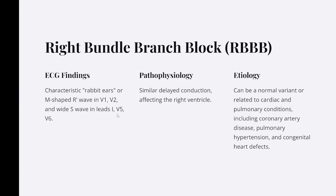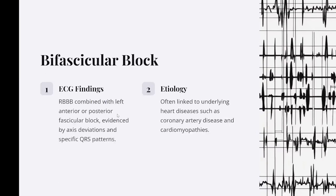Right bundle branch block (RBBB): ECG findings include characteristic rabbit ears or M-shaped R-wave in V1-V2 and wide S-wave in leads I, V5, V6. Pathophysiology involves similar delayed conduction affecting the right ventricle. Etiology can be a normal variant or related to cardiac and pulmonary conditions including coronary artery disease, pulmonary hypertension, and congenital heart defects. Bifascicular block may be combined with left anterior or posterior fascicular block, evidenced by axis deviations and specific QRS patterns, often linked to coronary artery disease and cardiomyopathies.